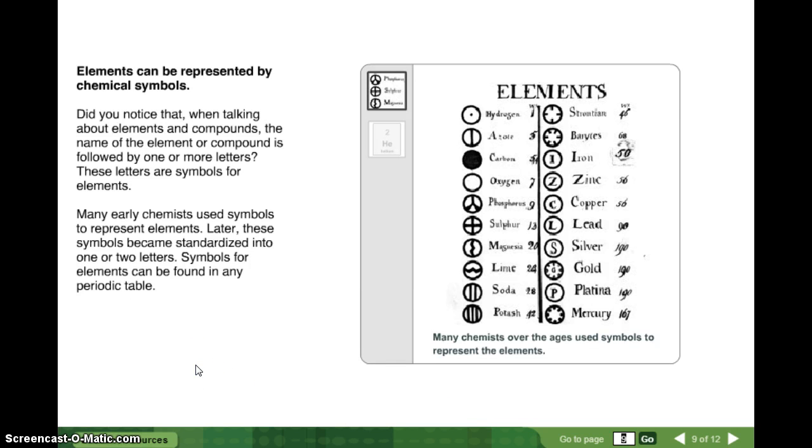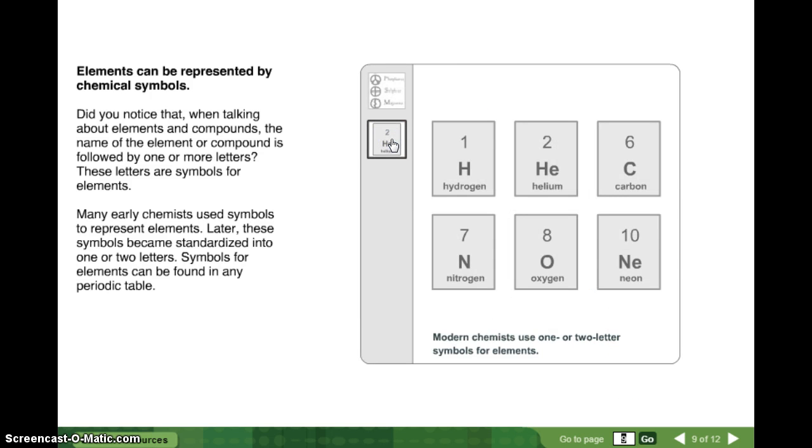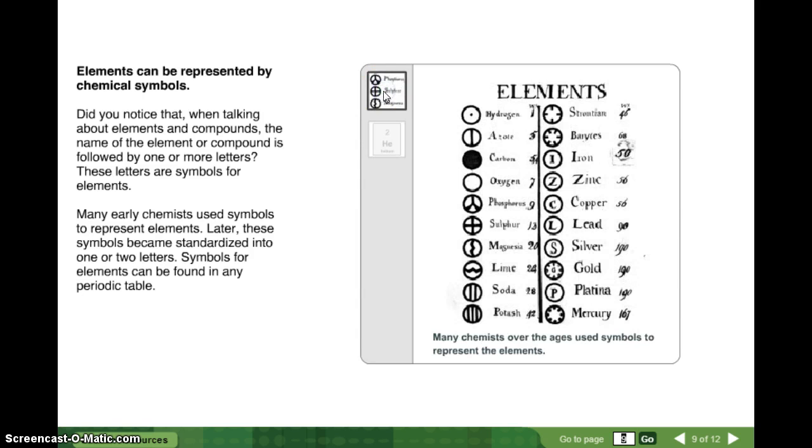Elements can be represented by chemical symbols. And remember, where do you find the elements? On the periodic table. Did you notice when talking about elements and compounds, the name of the element or compound is followed by one or more letters? These letters are symbols for elements. Many early chemists used symbols to represent elements. Later, these symbols became standardized into one or two letters. These letters, symbols for elements can be found on any periodic table. So, this is what they used to use. And this is how we do it now. And we'll talk more about what everything means, and we'll go to the next video.